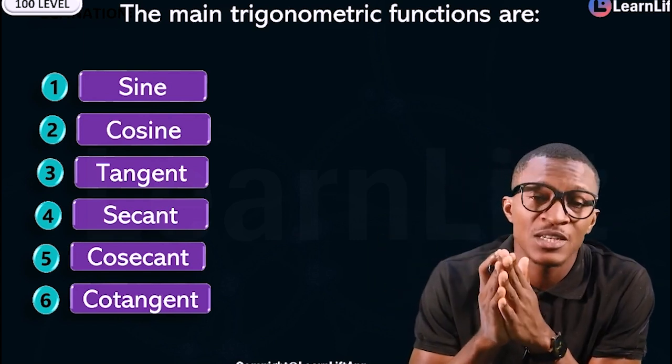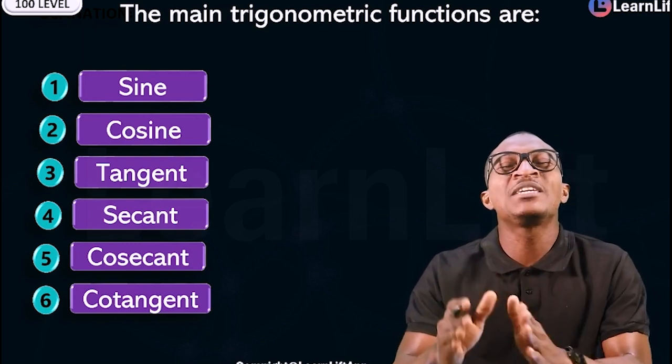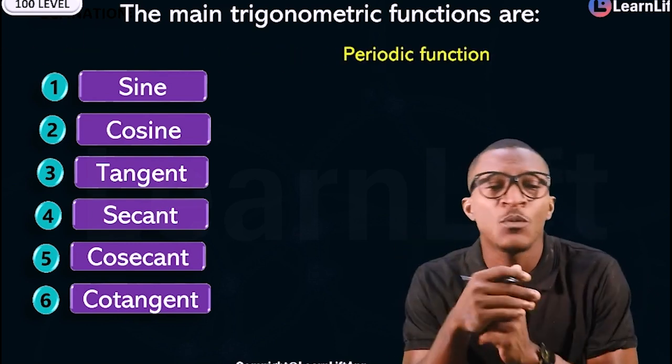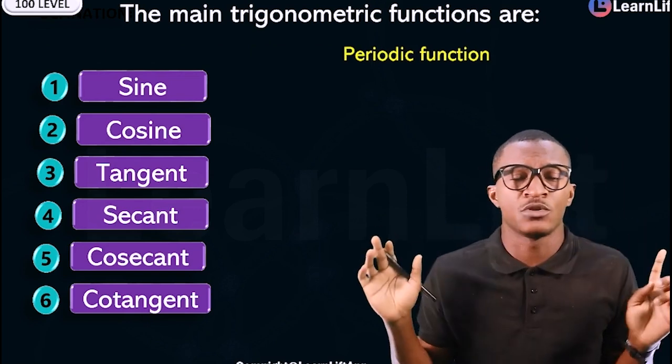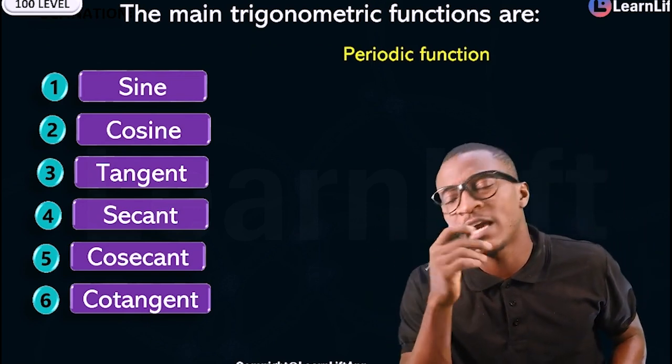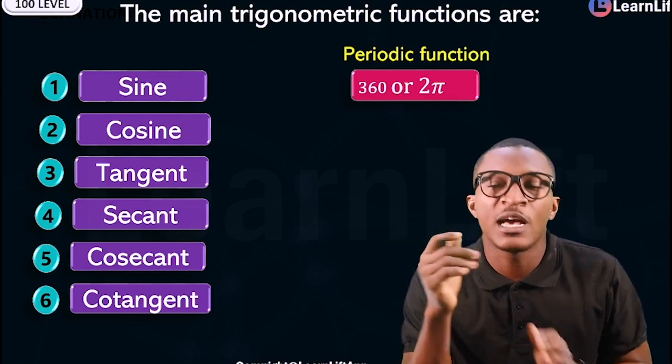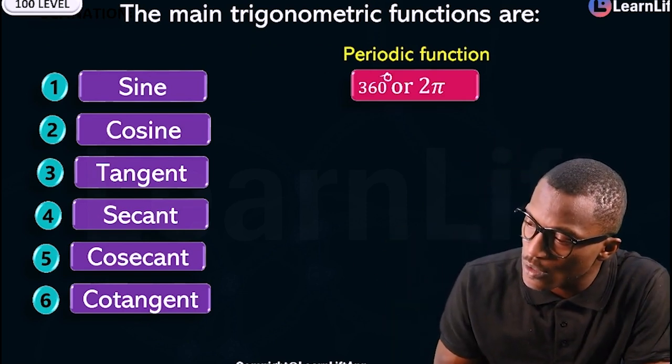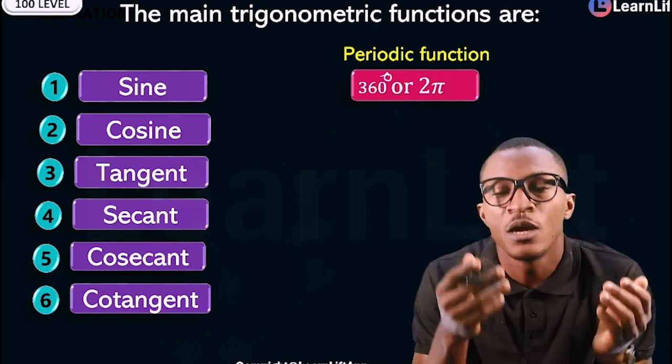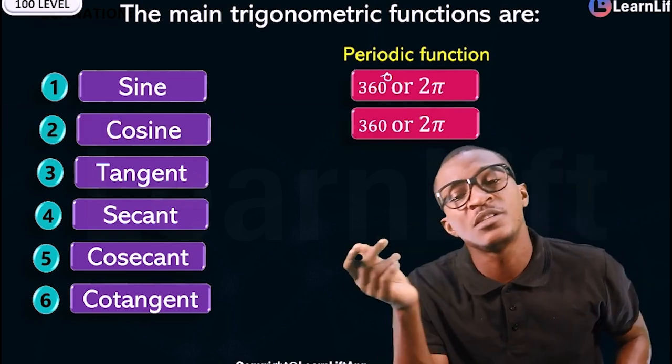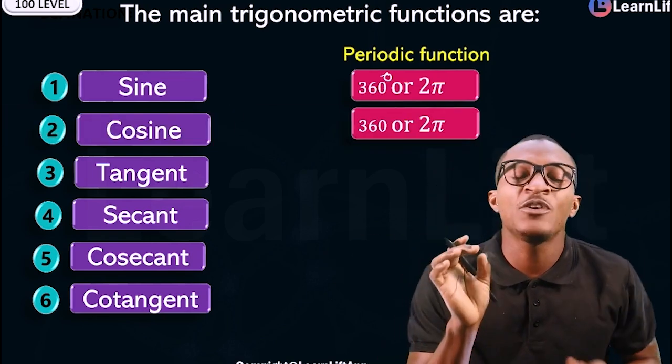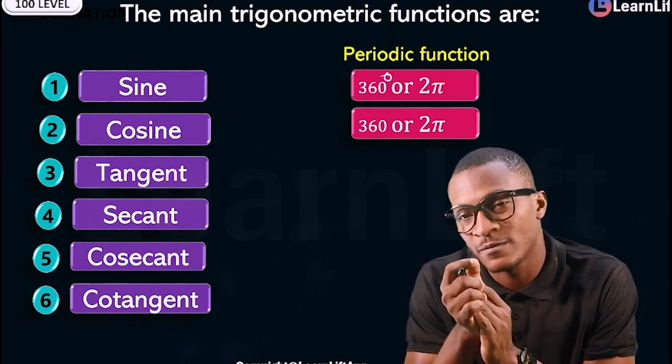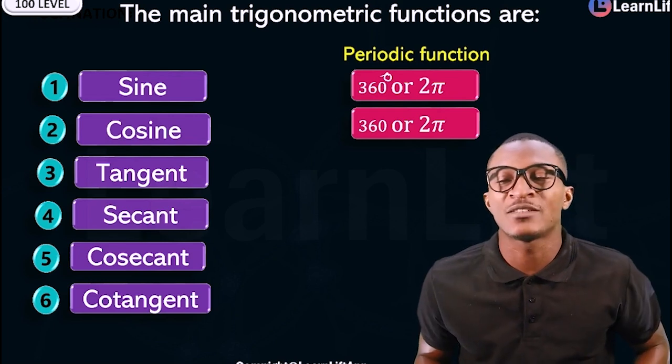A constant past question they will always ask you: what are their periodic functions? What is the periodic function of sine? What is the periodic function of cosine, tangent? This is important. The periodic function of sine is 360 degrees or 2π radians. Now, one π radian is 180. So 360 degrees or 2π radians. What of cosine? Cosine too is 360 degrees or 2π radians. Only sine and cosine are 360 or 2π radians. The rest are all π radians, that's 180. Tangent is π radians, that's 180. Secant is π radians, 180. Cosecant is π radians, 180. Cotangent is π radians.